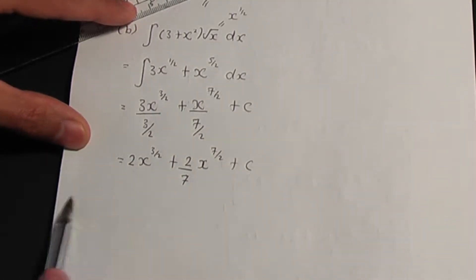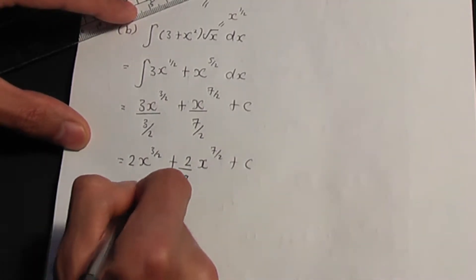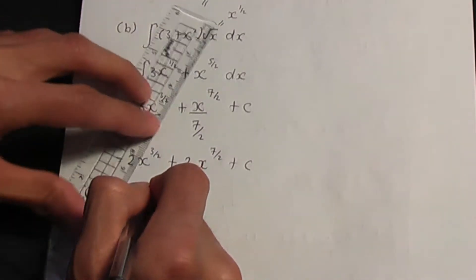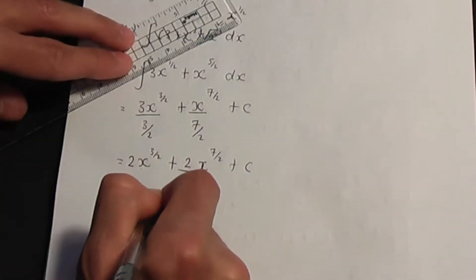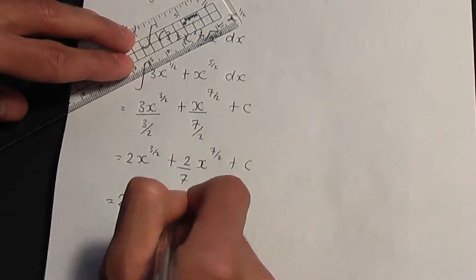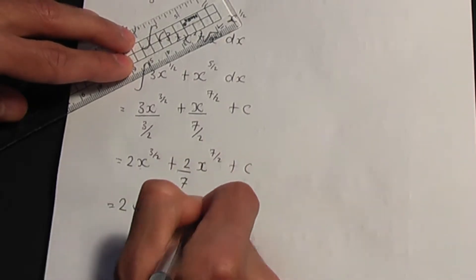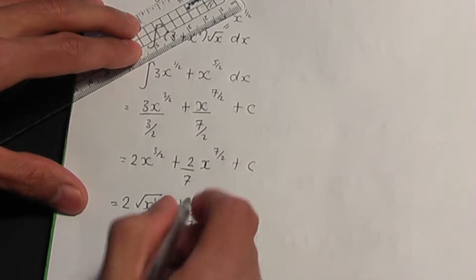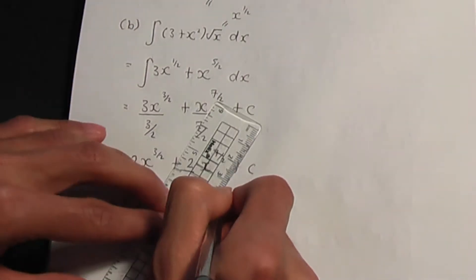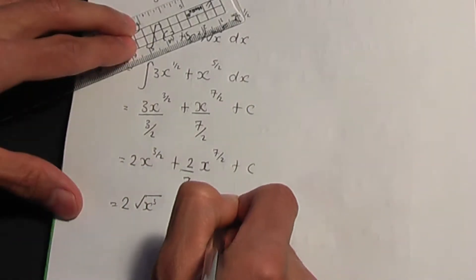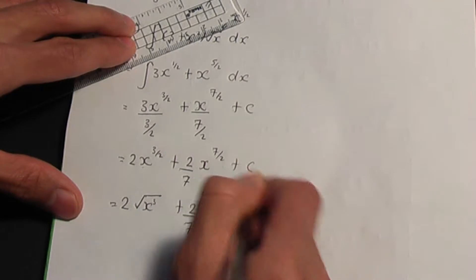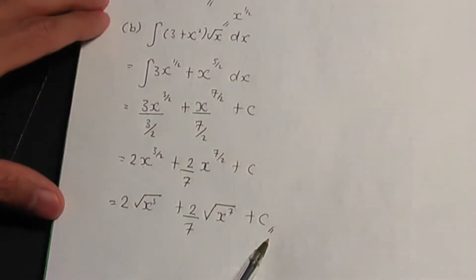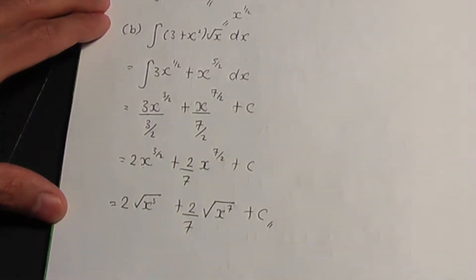Tidying this up: 3 divided by 3 over 2 is 2, so we have 2x to the power 3 over 2. Plus, 1 divided by 7 over 2 is 2 over 7, so it's 2 over 7 x to the power 7 over 2 plus c. Rewriting: x to the power 3 over 2 is the square root of x cubed, and x to the power 7 over 2 is the square root of x to the power 7, plus c. This is the solution to part b.